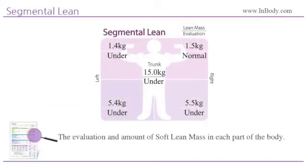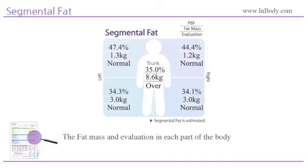Segmental Lean shows the evaluation and amount of soft lean mass in each part of the body. Segmental Fat shows the percent body fat, fat mass and evaluation in each part of the body.